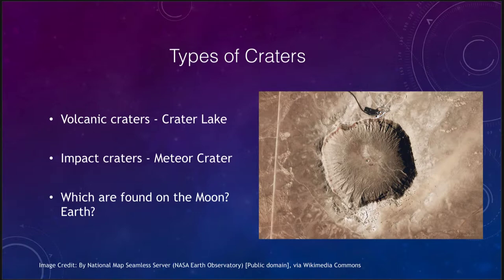We can see here that it looks a lot like many of the impacts we would get on the moon — you can see the raised edge around it and how it's been hollowed out by a very massive impact. This occurred in Arizona, fortunately out in the desert, meaning it is very well preserved because erosion is not nearly as significant there.